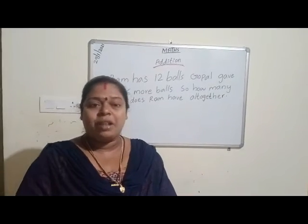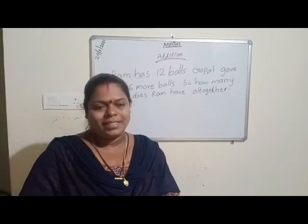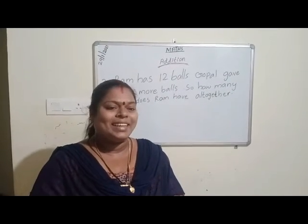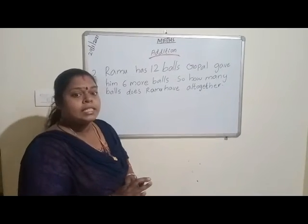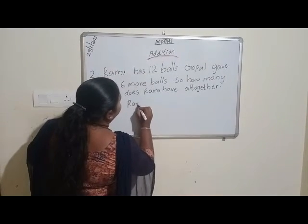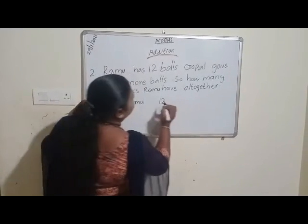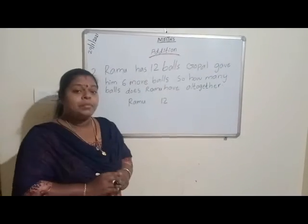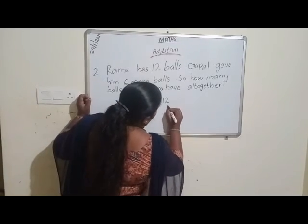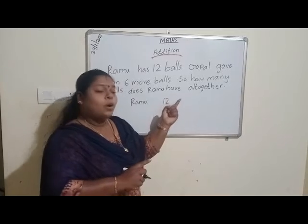One more example. Ramu has 12 balls. Gopal gave him 6 more balls. So, how many balls does Ramu have all together? Ramu has 12 balls. Gopal gave him 6 more balls. So how many balls does Ramu have altogether?